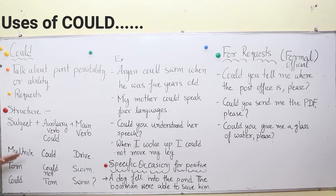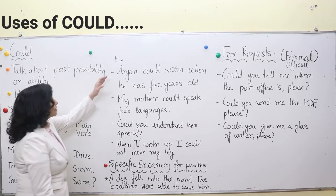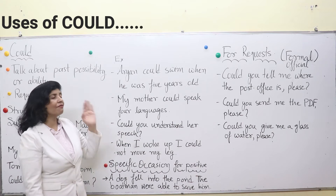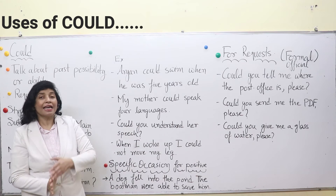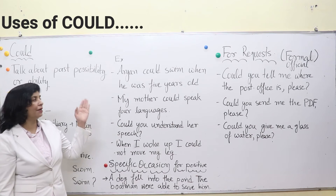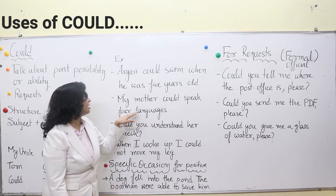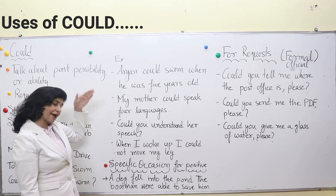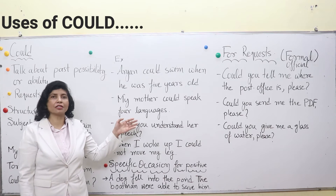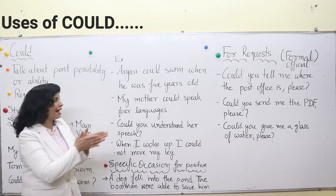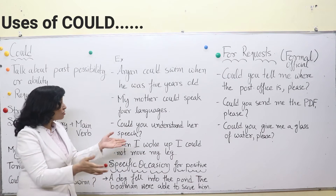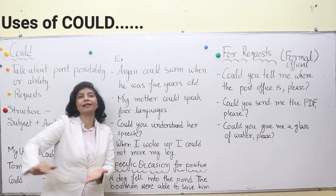For these types of sentences, could is always used. Some more examples: Aryan could swim when he was 5 years old — that means when he was just a kid, only 5 years old, he could swim then also. That is the past possibility or ability we are expressing. My mother could speak 4 languages — this is again past possibility or ability. My mother could speak 4 languages when I was very young, and even now she can speak 7 languages. You can elaborate the sentence in this manner.